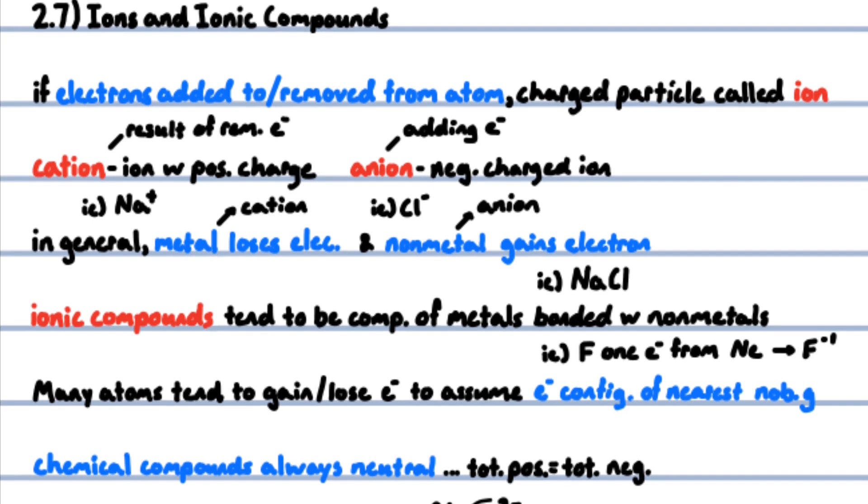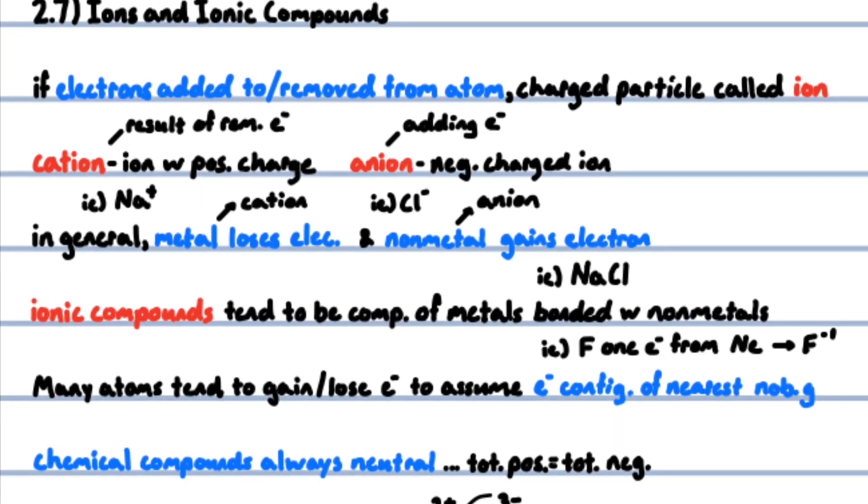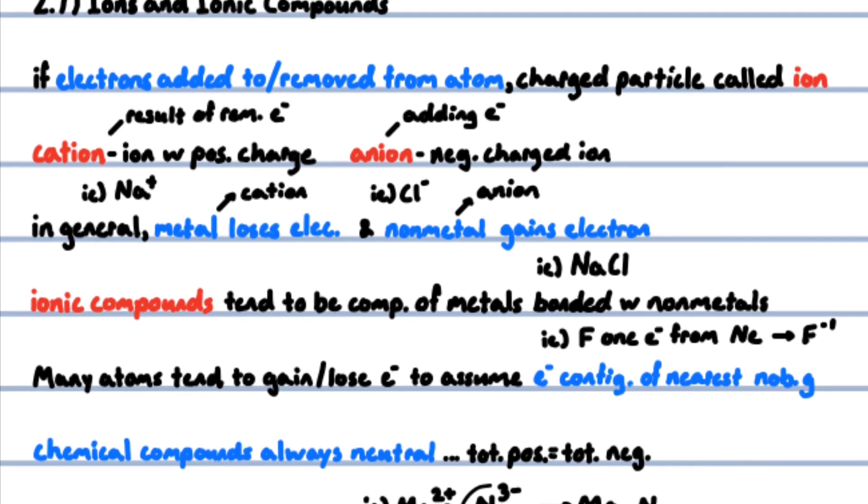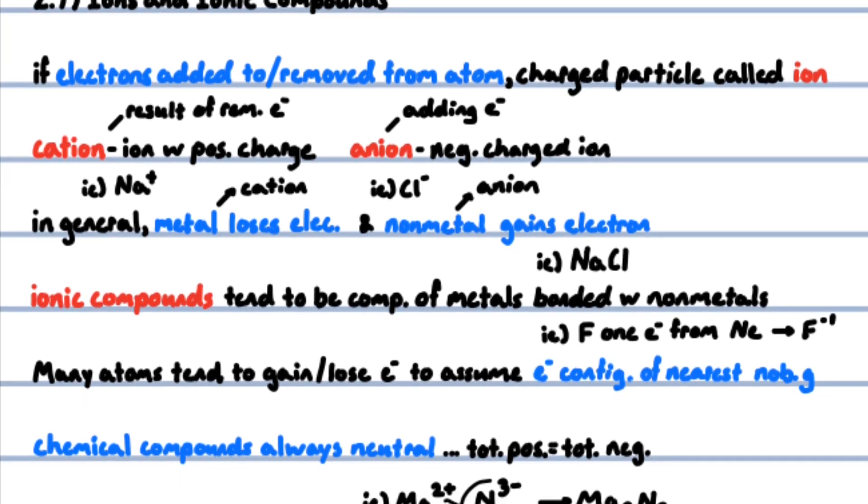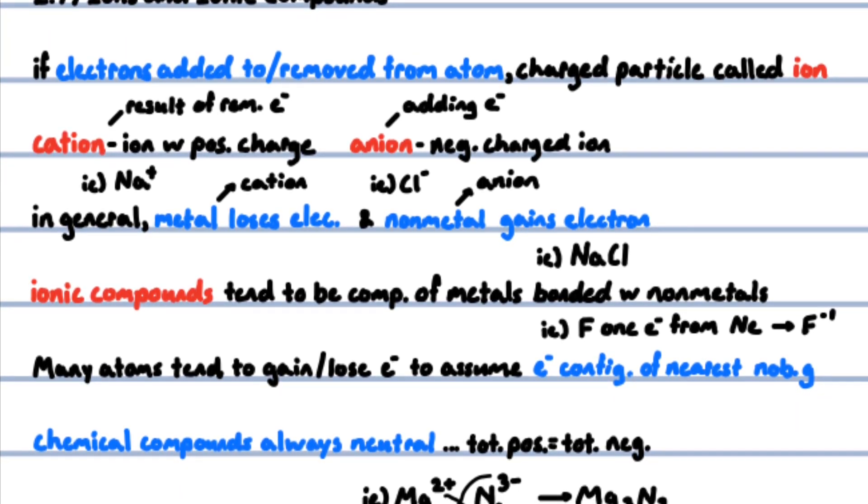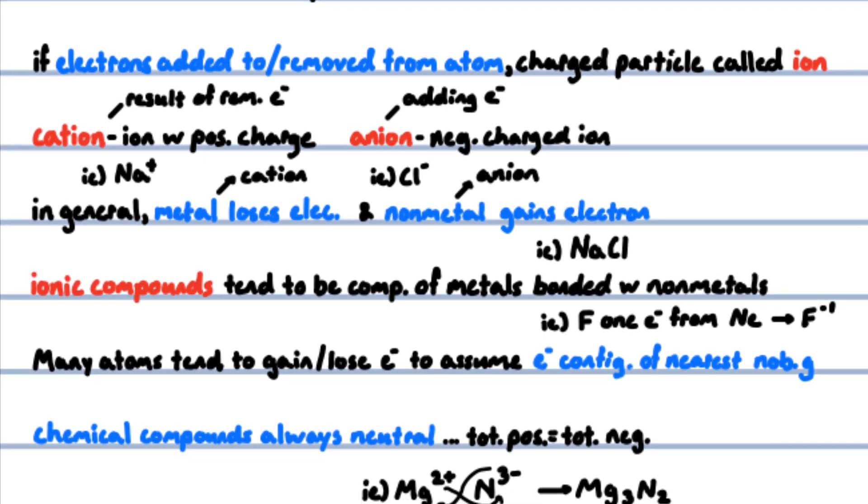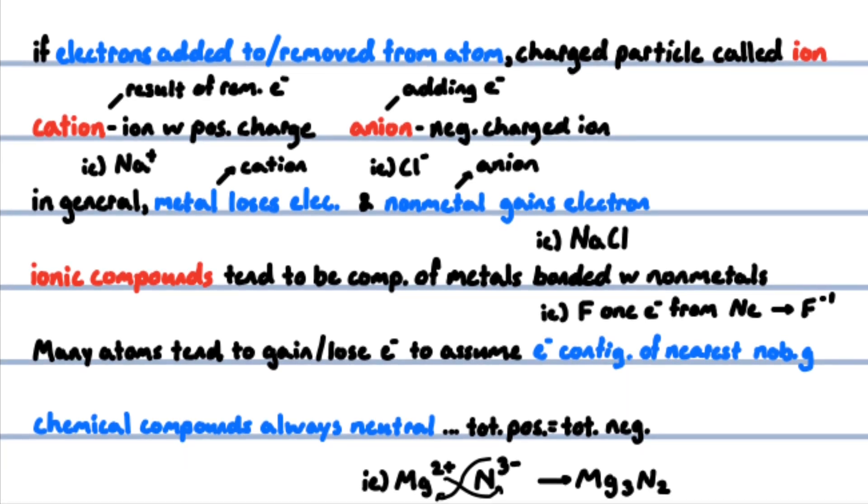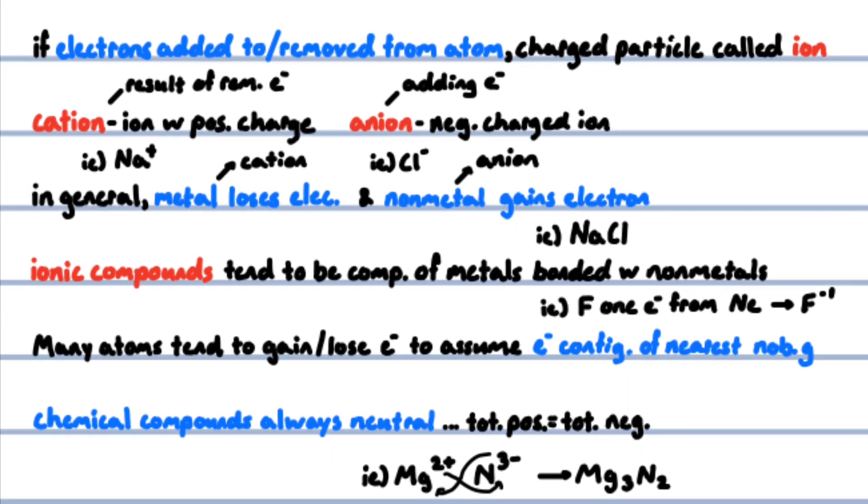If electrons are removed from or added to an atom, a charged particle called an ion is formed. A cation is a positively charged ion resulting from removing electrons. An anion is a negatively charged ion resulting from adding electrons. In general, metals lose electrons forming cations, such as the sodium ion, and non-metals gain electrons forming anions, such as the chloride ion. Ionic compounds tend to be compounds of metals bonded with non-metals, like sodium chloride.